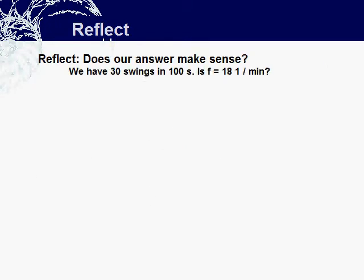So I try to look at it from a different angle. We have 30 swings in 100 seconds. Is 18 per minute reasonable? Well, here's the different angle. Looking at that, I see that three swings go every 10 seconds. I make the numbers easier.